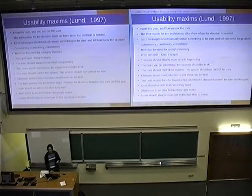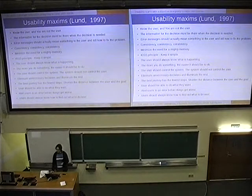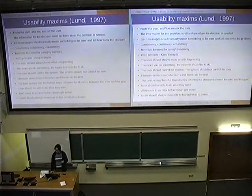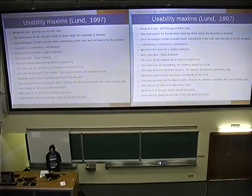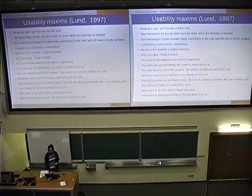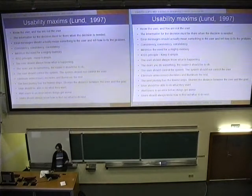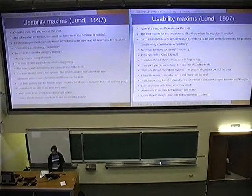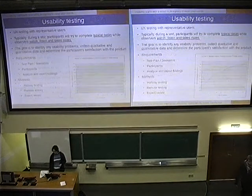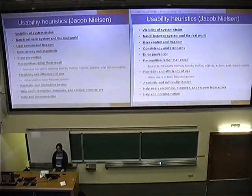Here is a quick reading of the heuristics: Know the user — you are not the user. Keep information for decisions where and when the decision is needed. Error messages should mean something to the user and explain how to fix the problem. Consistency — minimize the need for memory, keep it simple. Users should always know what is happening. The more you do something, the easier it should be. Users should control the system. Eliminate unnecessary decisions. The best journey has few steps — shorten the distance between the user and the goal. Users should be able to do what they want, be alerted to errors before they get worse, and always know what to do next.